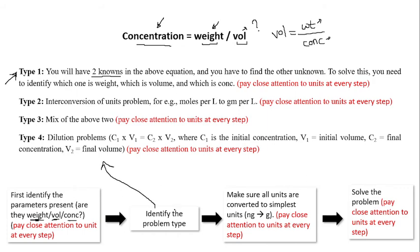The second type is the interconversion of units. In this, you have to convert one type of volume to another type of volume, concentration to another type of concentration, or one type of weight to another type of weight. This is interconversion of units. For example, liter to microliter or gram to milligram. I'm just giving simple examples; there will be more complicated ones coming. This is the interconversion of units.